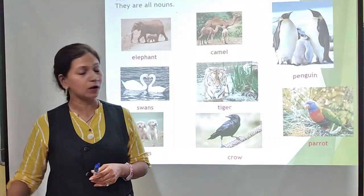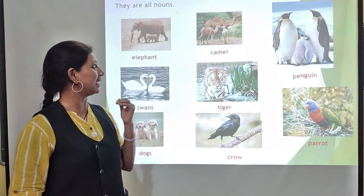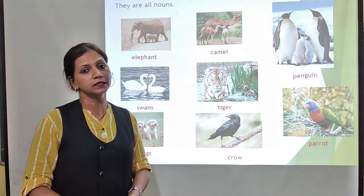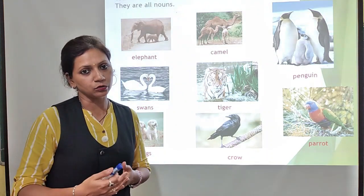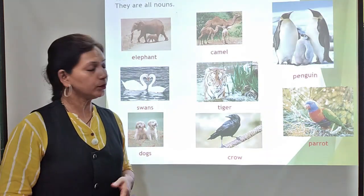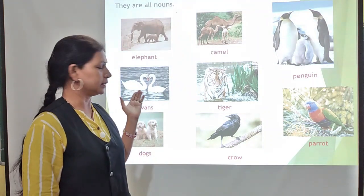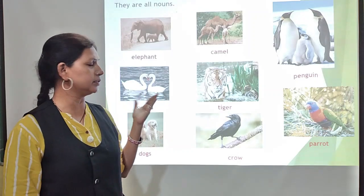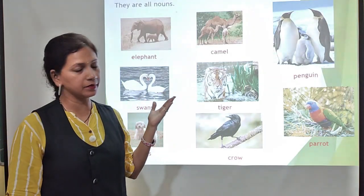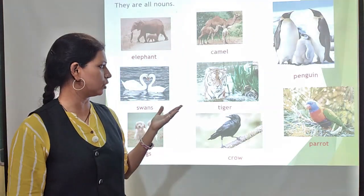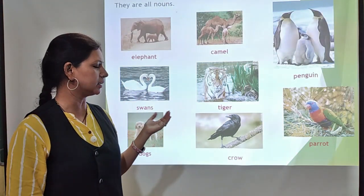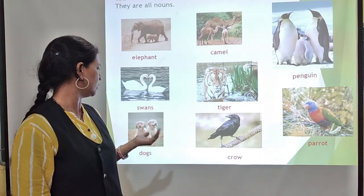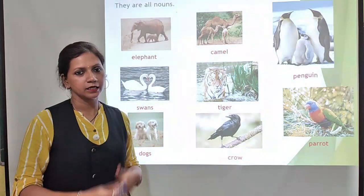Now about animals. Animals are also called nouns. Examples include: elephant, camel, penguin, tiger, parrot, crow, swan, and dog.